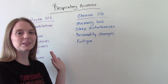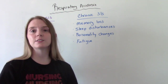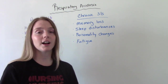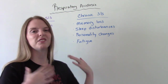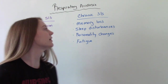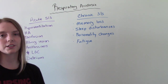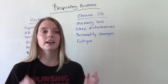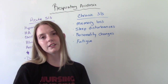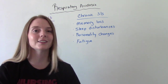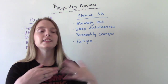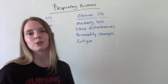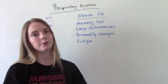Chronic signs and symptoms develop over time and include things like memory loss, sleep disturbances, fatigue, and personality changes — usually irritability and agitation. These typically result from the lack of oxygen, the acidic blood, the fatigue, and the sleep disturbances, so they all contribute to each other.